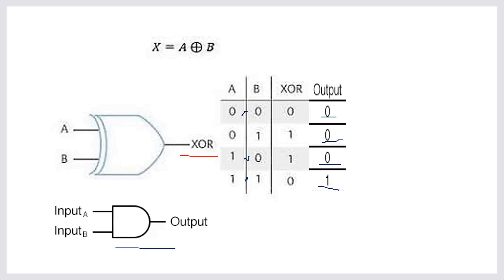The half adder is the addition of two bits. When we add two bits and both inputs become one, the addition output becomes zero and the carry bit becomes one. In all other cases, the carry bit becomes zero, as represented in the truth table.